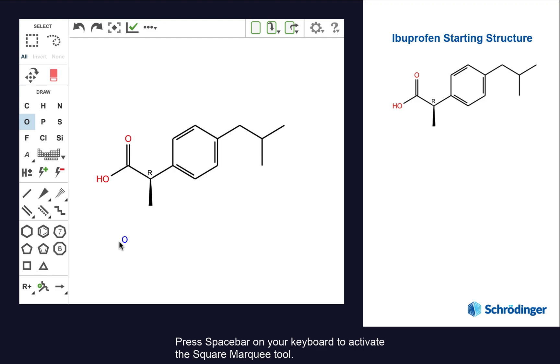Press spacebar on your keyboard to activate the square marquee tool. This tool can also be activated by clicking.